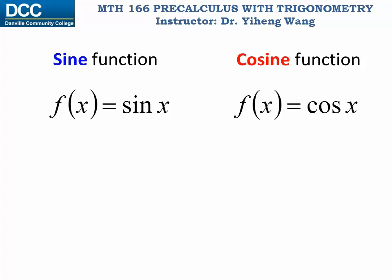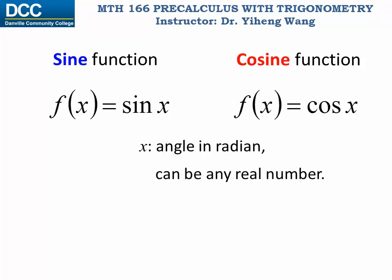These are the sine function and cosine function given in function notation. In each function, x is the independent variable — it represents an angle given in radians, because when an angle is given in radians it is dimensionless. Since we can evaluate sine and cosine values for any given angle, x can be any real number, meaning the domain includes all real numbers from negative infinity to positive infinity.